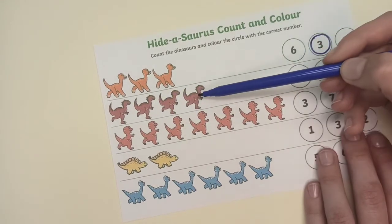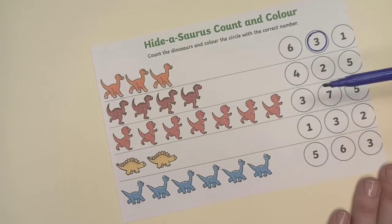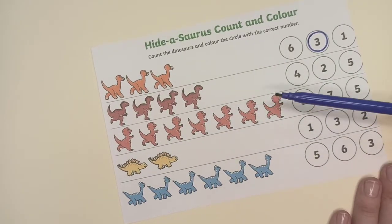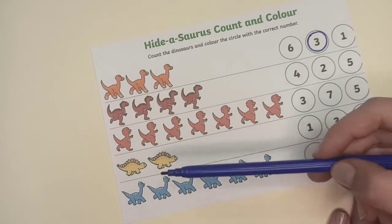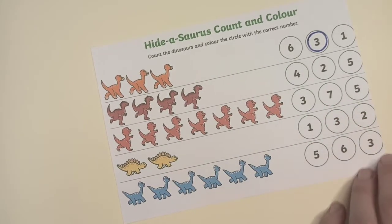1, 2, 3. Number 3. 1, 2, 3, 4. 1, 2, 3, 4, 5, 6, 7. 1, 2. 1, 2, 3, 4, 5, 6.